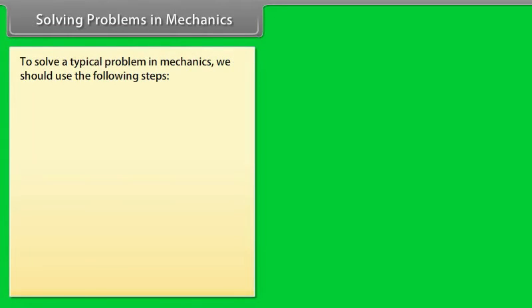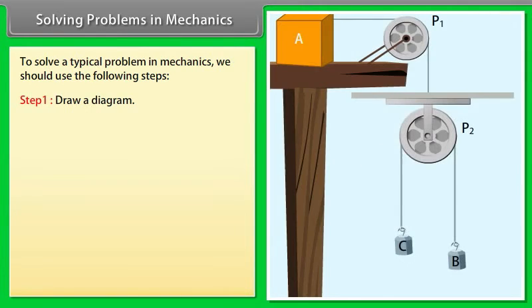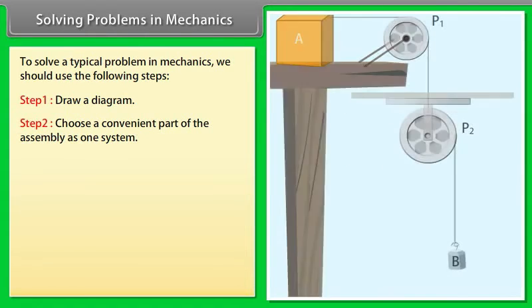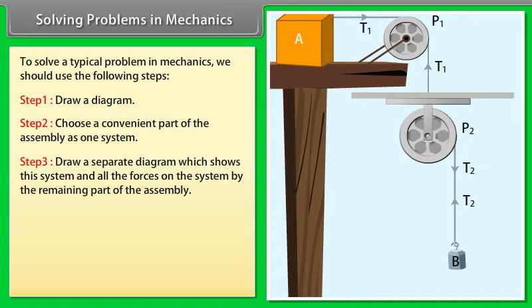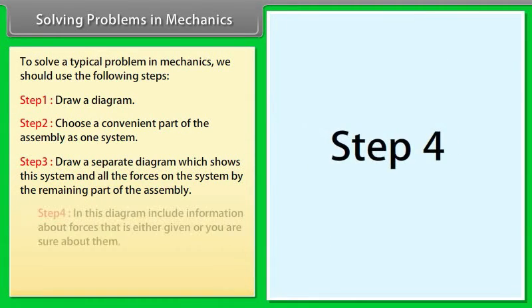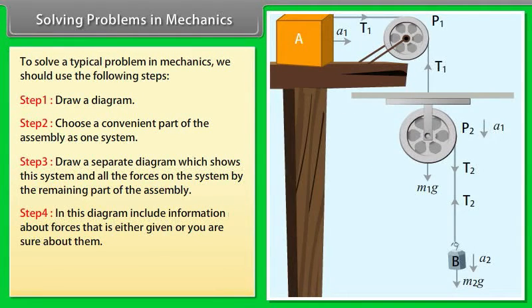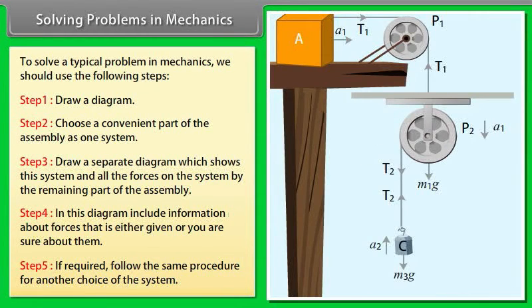Solving Problems in Mechanics: Step 1 — Draw a diagram. Step 2 — Choose a convenient part of the assembly as one system. Step 3 — Draw a separate diagram showing this system and all the forces on it by the remaining part of the assembly. Step 4 — Include information about forces that is given or known. Step 5 — If required, follow the same procedure for another choice of system.